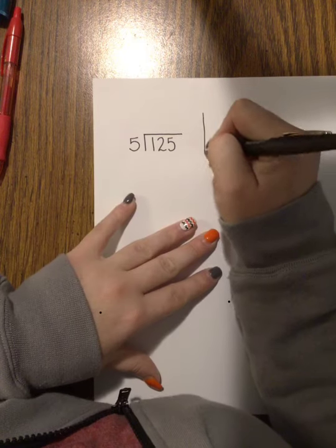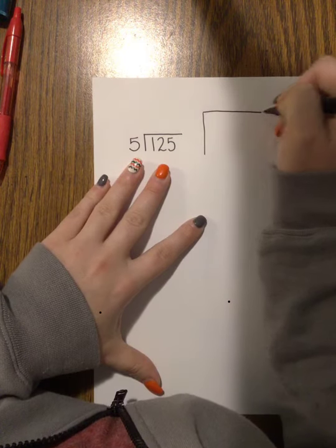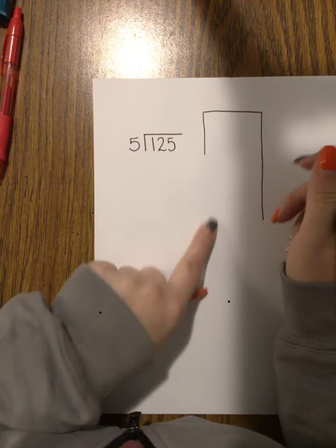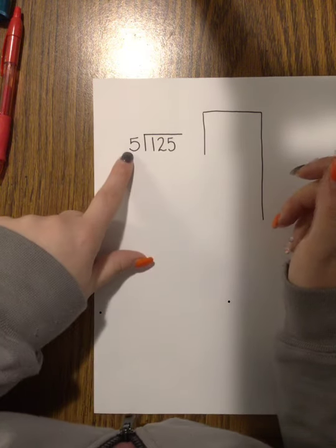I like to call this the bank method. I'm going to put my bank over here. This is where I'm going to keep track of all of the groups of five that I'm taking out. When I'm doing partial quotients, the biggest thing you want to do is try and take out groups of 10 times your divisor because tens are easy to work with.